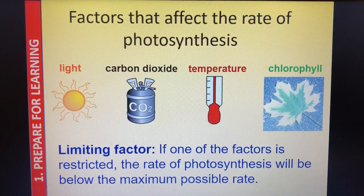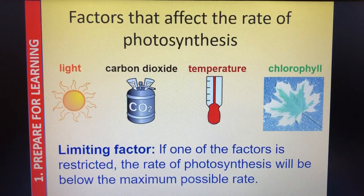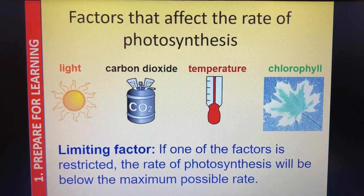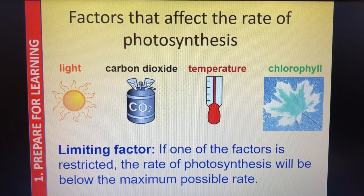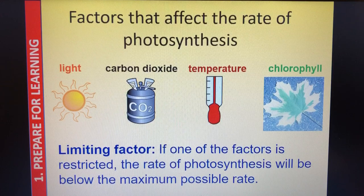Hi Year 9, the next three lessons of this topic B2 are going to be looking at limiting factors - the factors that affect the rate of photosynthesis. This is lesson 2 of the topic and we are going to look at how light affects the rate of photosynthesis today. A limiting factor is if one of the factors is restricted or limited, the rate of photosynthesis will be below the maximum possible rate. It's about finding the best conditions to get the best rate of photosynthesis, therefore the best growth and make the most money for farmers.